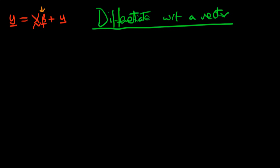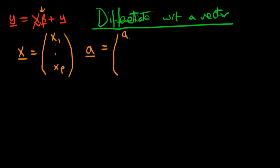Let's think about a particular example whereby I have a vector x which has p entries: x1, x2, all the way through to xp. Similarly, there is a vector a which we define as also having p entries: a1, a2, all the way through to ap. In both cases this is a p by 1 vector, so they both have the same dimensions.